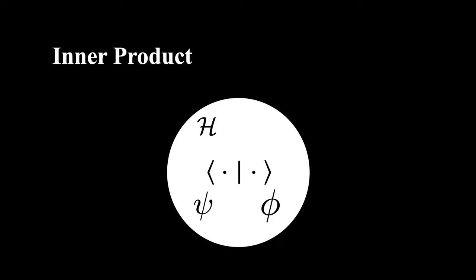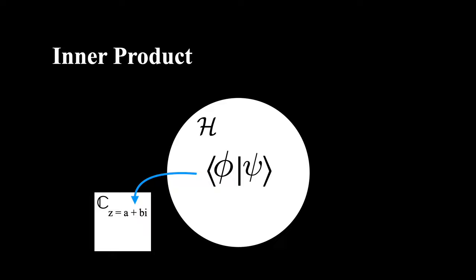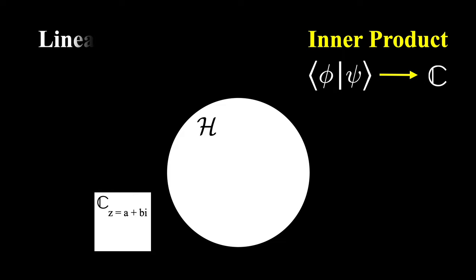Now any inner product takes two elements that live in the Hilbert space and maps them to a complex number. A linear functional, on the other hand, maps only one function from the Hilbert space to a complex number. And when it does this, it must satisfy the two properties of being linear.